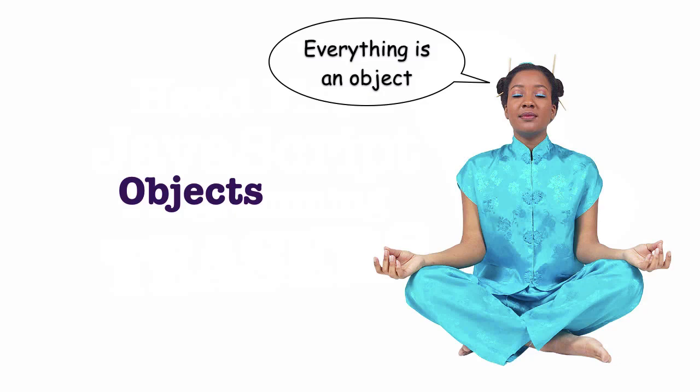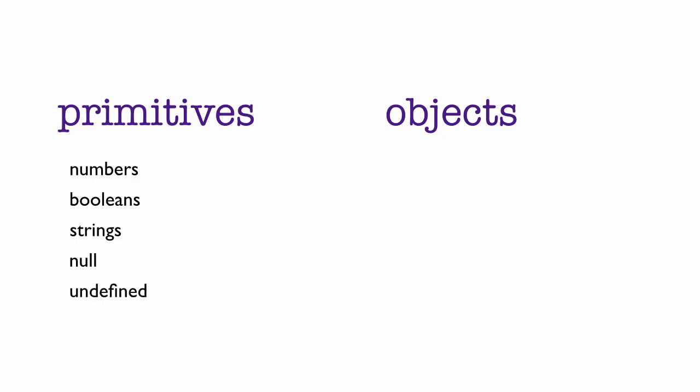Let's break that down a bit to see exactly what we mean. In an earlier video in this series, we explained that the values in JavaScript fall into two categories: primitives and objects. The primitives category includes numbers, booleans, strings, null, and undefined. The objects category includes everything else.